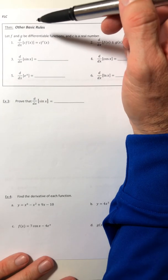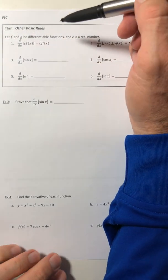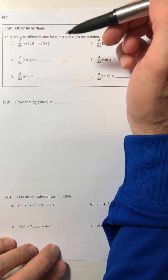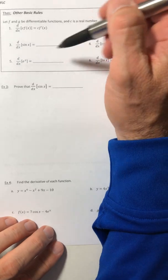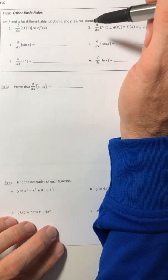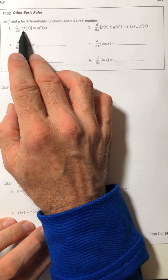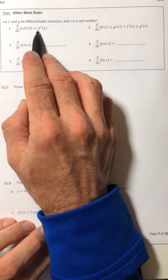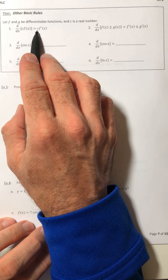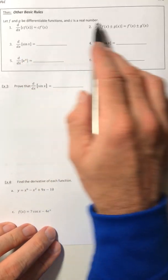All right, welcome back. Let's continue on with our derivative rules, some other basic rules. We already looked at the power rule and the derivative of a constant. So number one is if you notice that your function has been multiplied by a constant, then its derivative will be multiplied by that same constant.